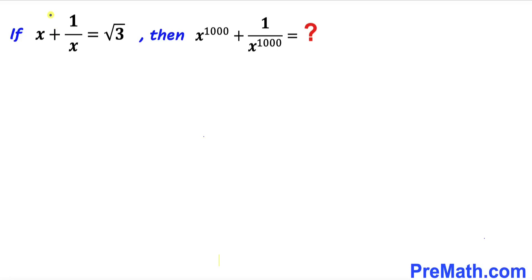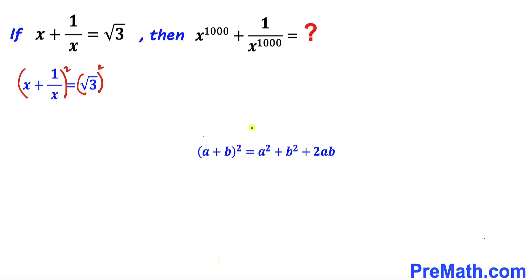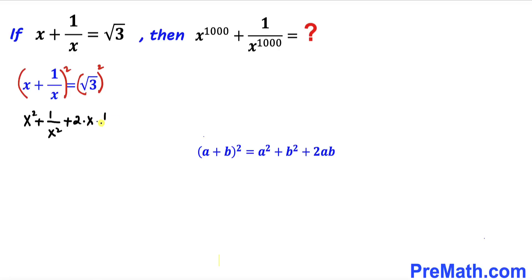Let's focus on the very first equation. We'll take the square on both sides of this equation. Recalling the identity (a + b)² = a² + b² + 2ab and applying it on the left hand side, we get x² + 1/x² + 2 times x times 1/x equals 3.